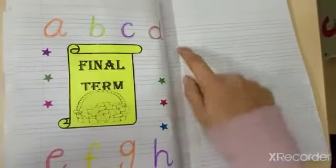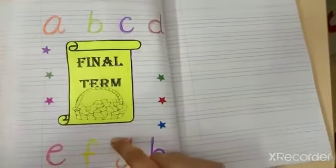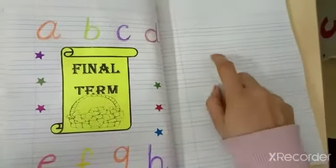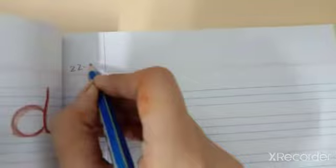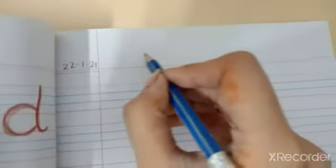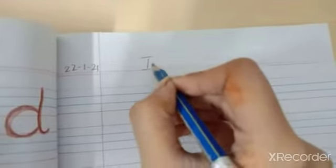Then you will take out new page and on new page what you will write? You will write date, which is 22nd of January 2021, and you will write the heading of introduction.